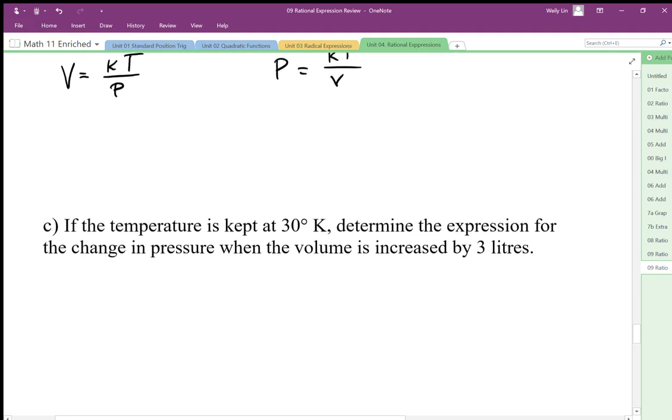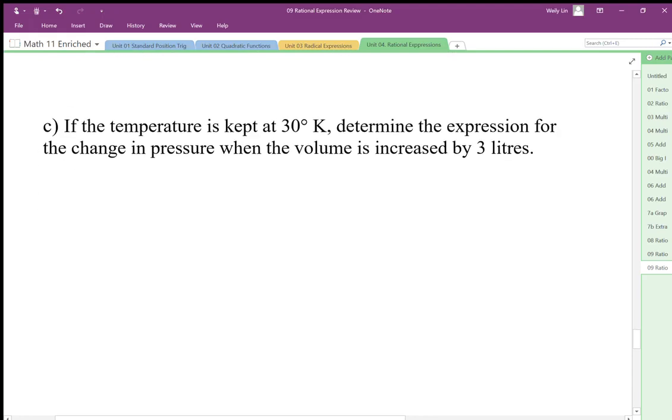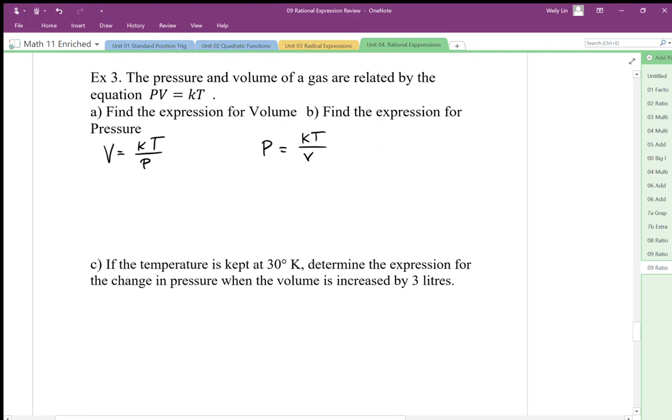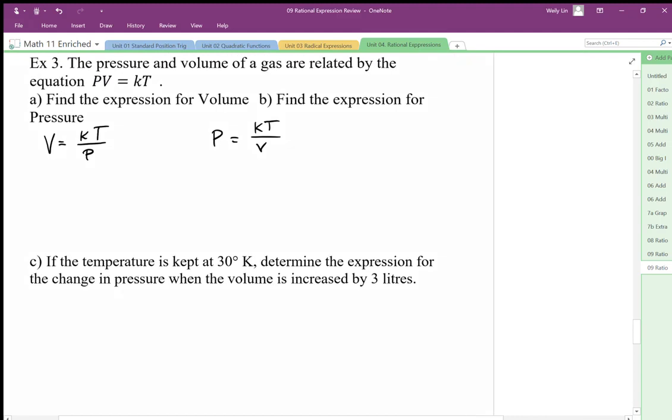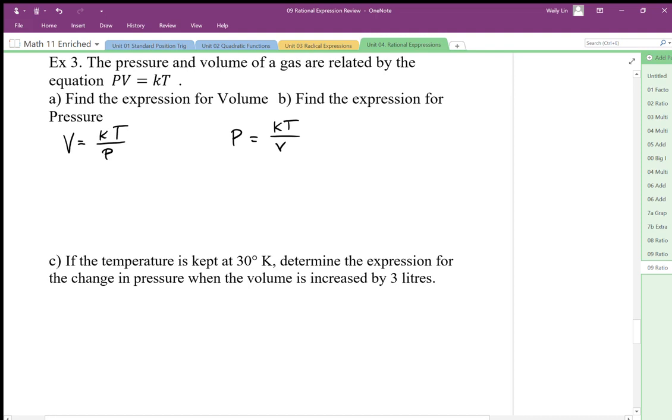If the temperature is kept constant at 30 degrees Kelvin, determine the expression for the change in pressure if the volume is increased by 3 liters. So I want to find out this change in pressure. This is P initial minus P final.